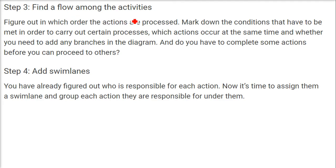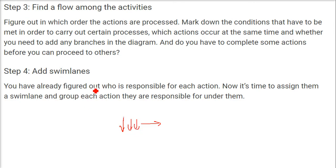Third, find the flow among the activities — which should come after which — and mark down the conditions that have to be met to carry out certain processes. Identify which actions occur at the same time and whether you need to add branches. Determine if some actions must be completed before others can proceed. Finally, add swim lanes and assign each action to the actor responsible for it.